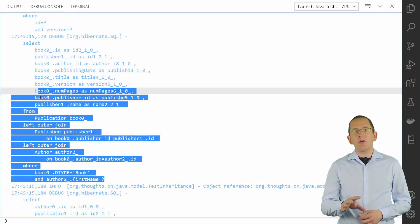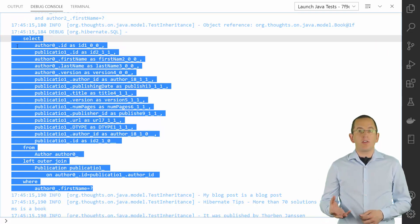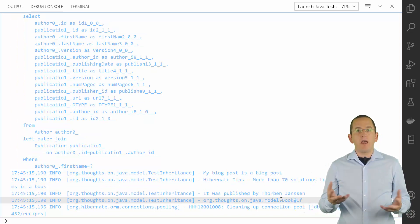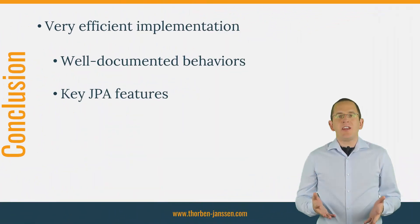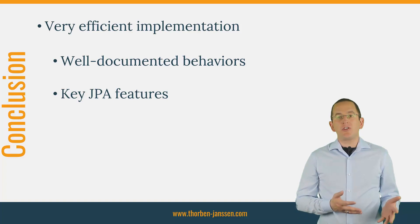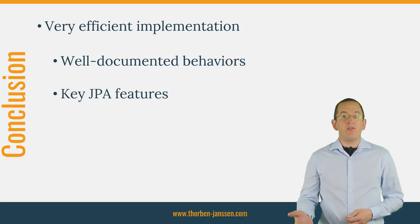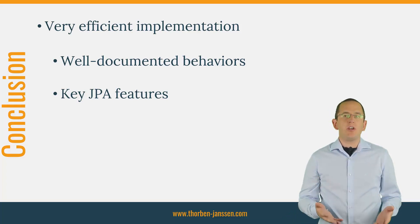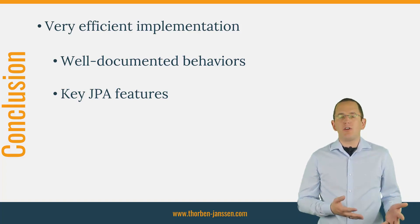As you can see in the log file, Hibernate only executed the two expected queries. Even though the second query did not initialize the association between the book and the publisher, the lazily fetched association is available. As the logged object references show, Hibernate used the same book entity object in the result of both queries. Hibernate's first-level cache and its guarantee that each session only uses one entity representation for each database record can be used to create very efficient implementations. And before you start to worry, this workaround is based on well-documented behaviors and key features of JPA and Hibernate — it's future-proof and you don't need to worry about it when updating your Hibernate dependency.